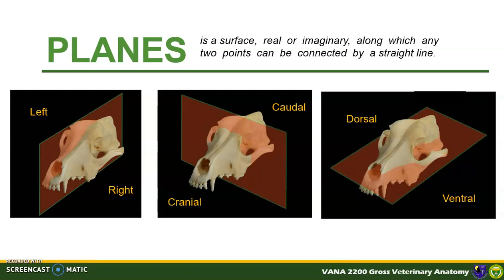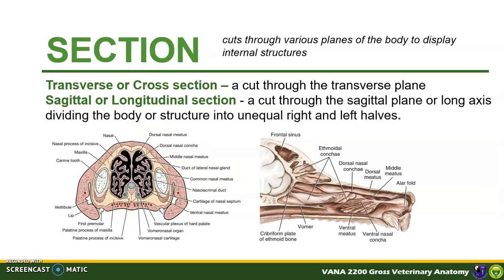Here are examples of imaginary planes applied on a skull. The median plane imagines divides the structure into left and right halves. The transverse plane divides the structure into cranial and caudal parts. The frontal plane divides the structure into dorsal and ventral parts. However, in anatomy we do not simply imagine the planes — to study deeper structures, we dissect, thus we cut. Sections are cuts through various planes of the body to display the internal structure.